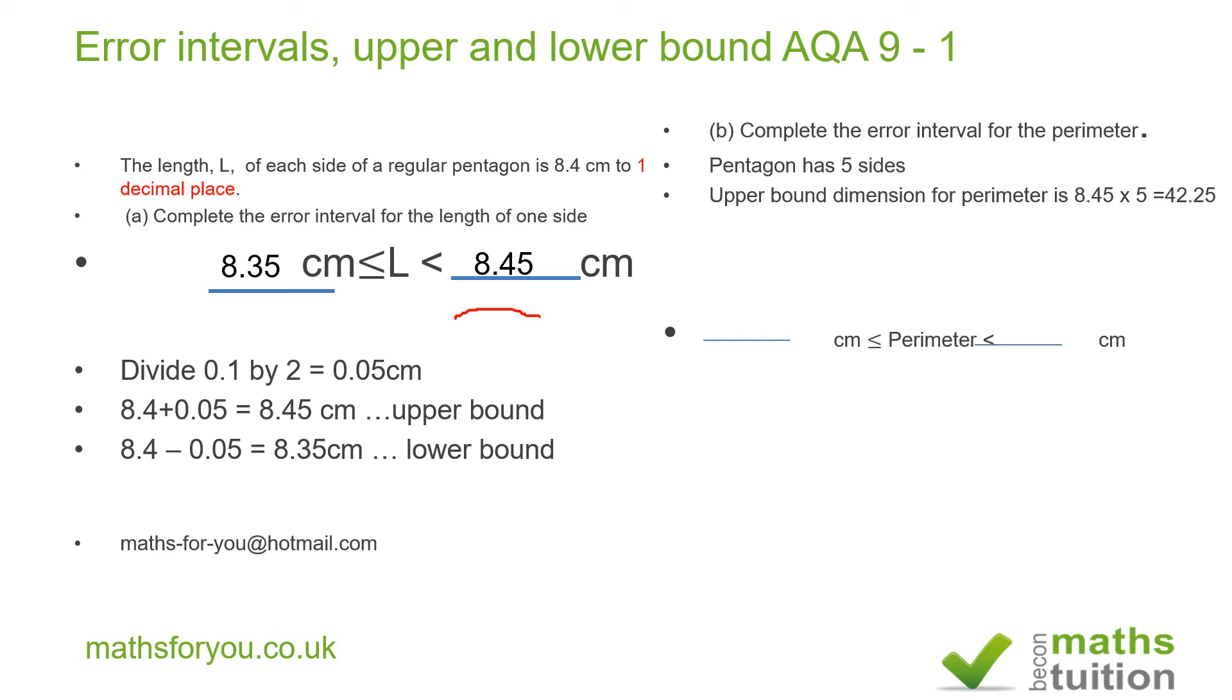Oops, sorry. And then for the... That's it. That's good now. Sorry, I apologize. Okay, and then for the lower bound, I multiply 8.35 by 5 and that gives me 41.75 centimeters.